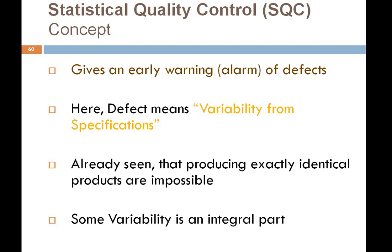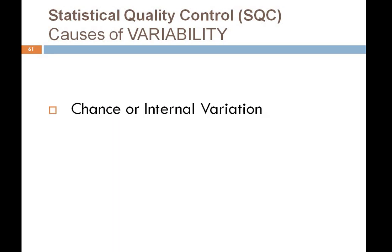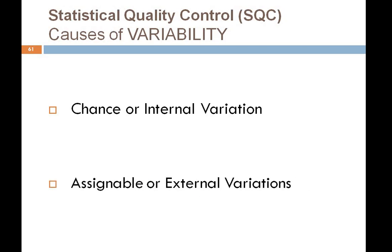This leads to an important question: why does this variability occur? We need to know the causes of these variations from our set standards and specifications. There are mainly two types: one is Chance or Internal variation, and the other is Assignable or External variation. We will understand each one by one.